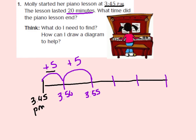So far I have gone 5, 10 minutes. Remember, we're trying to get to 20 minutes. Let's do another 5-minute jump — plus 5 minutes, that will be 4 o'clock. If I'm at 3:55 and I go 5 minutes, I will be at 4 o'clock. So far I've gone 5, 10, 15. Let's do one more jump.